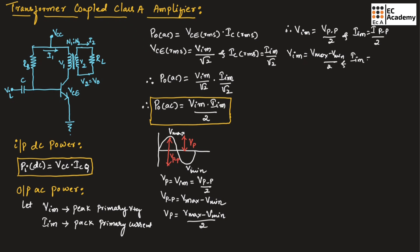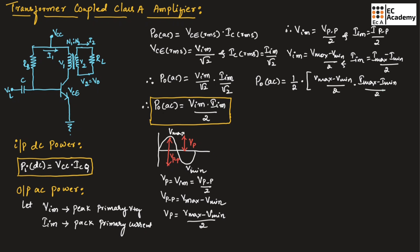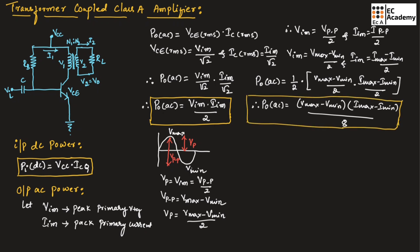Substituting these expressions into the output power equation, the output AC power equals (1/2) × [(V_maximum − V_minimum)/2] × [(I_maximum − I_minimum)/2], which simplifies to (V_maximum − V_minimum) × (I_maximum − I_minimum) divided by 8. This is the output AC power in terms of maximum and minimum voltage.